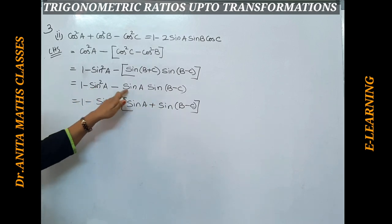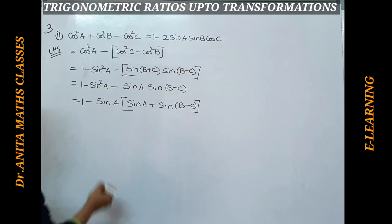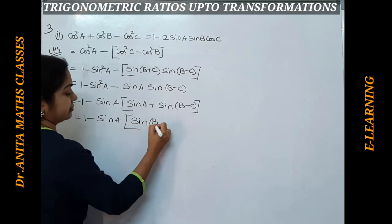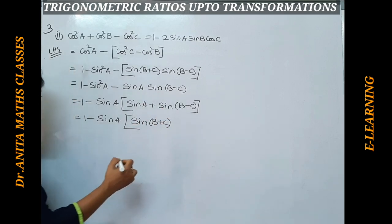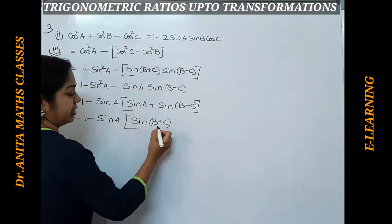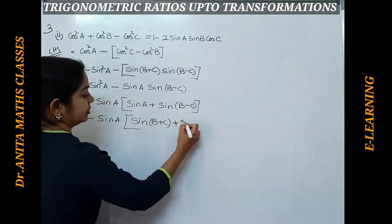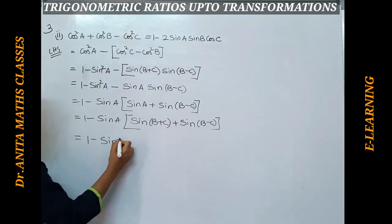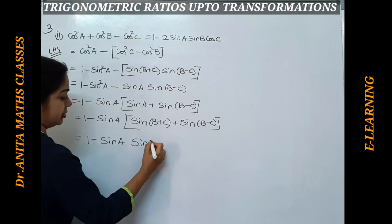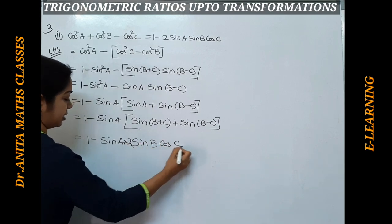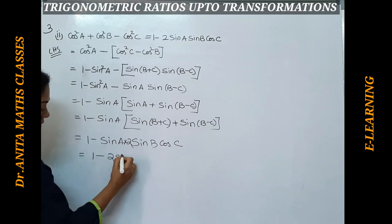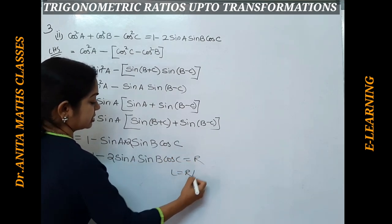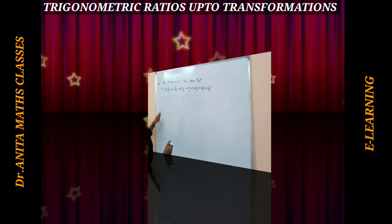Inside the bracket we replace sinA with sin(b+c). So sinA + sin(b-c) becomes sin(b+c) + sin(b-c) = 2 sinB cosC. Therefore the expression becomes 1 - sinA · 2 sinB cosC, which equals 1 - 2 sinA sinB cosC. This is the RHS, so LHS = RHS, hence proved. Pause and note it down.